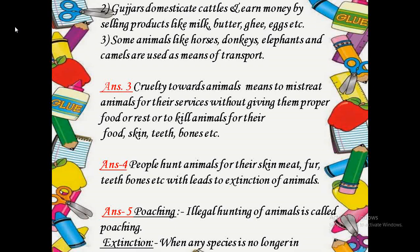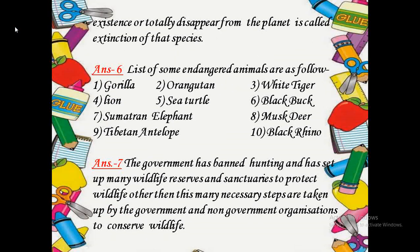Question 4: Why do people hunt animals? Answer: People hunt animals for their skin, meat, fur, teeth, bones, etc., which leads them to extinction. Question 5: Define poaching and extinction. Answer: Poaching — illegal hunting of animals is called poaching. Extinction — when any species is no longer in existence or totally disappears from the planet, it is called extinction of that species.